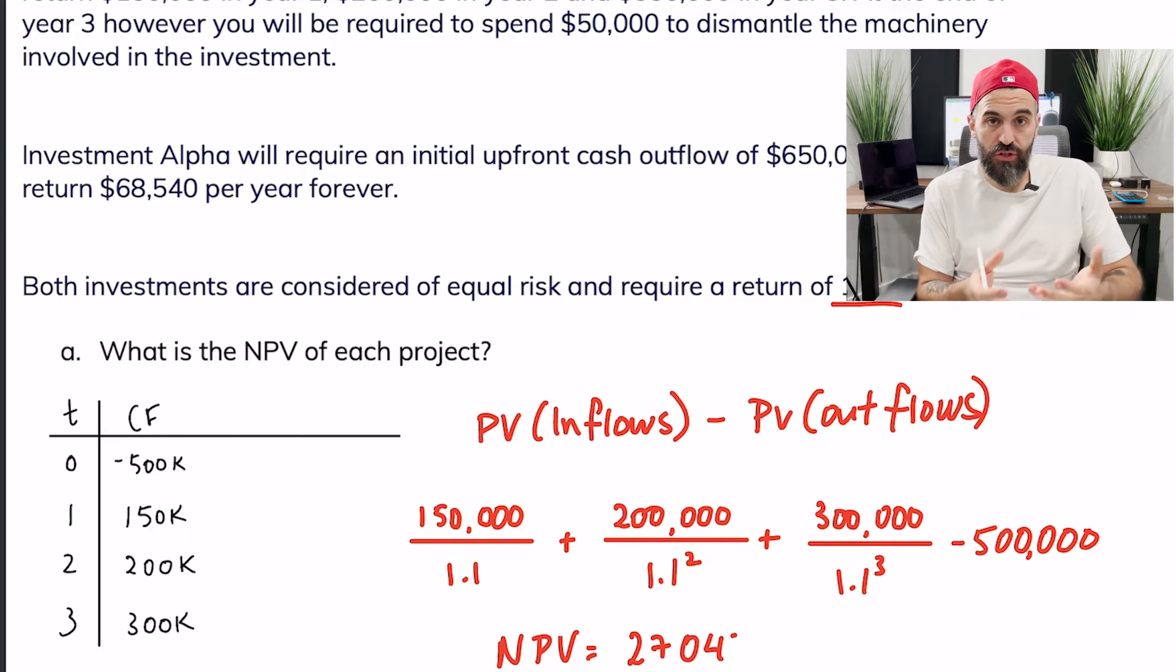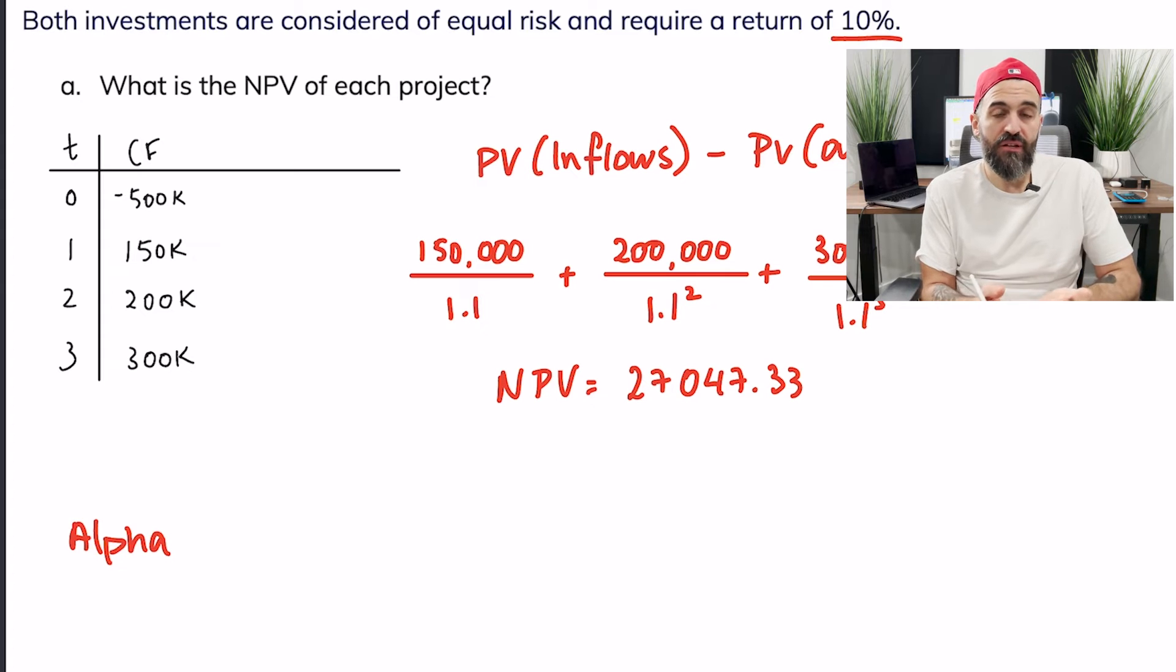Now let's move on to the perpetual project which is a little bit simpler. For Alpha because it's perpetual you're still going to follow the same formula but the present value of the inflows is a lot quicker to do.